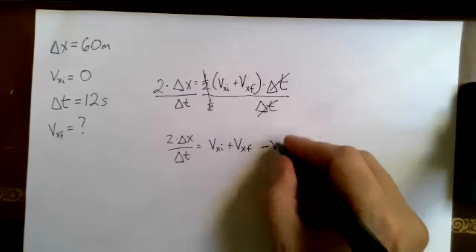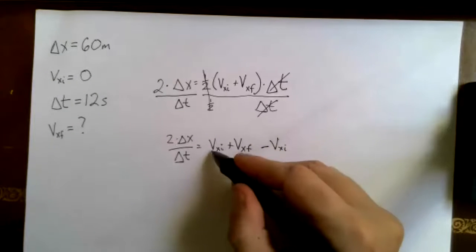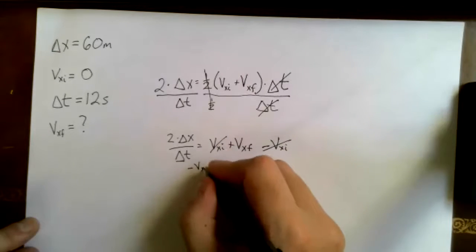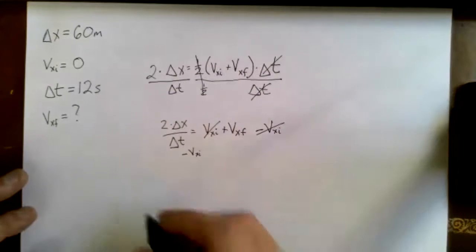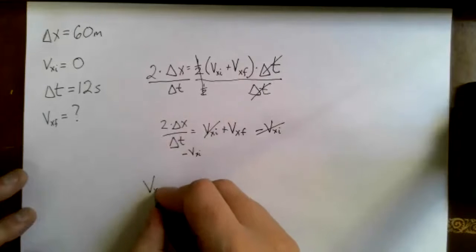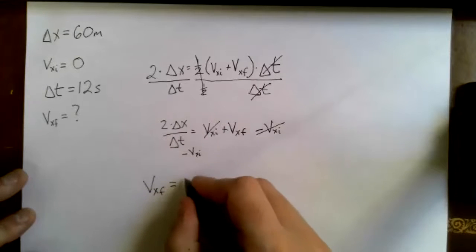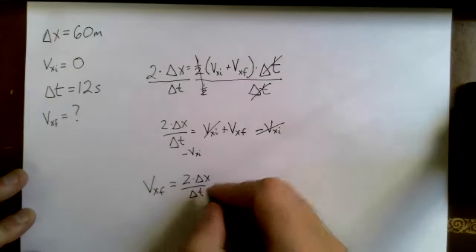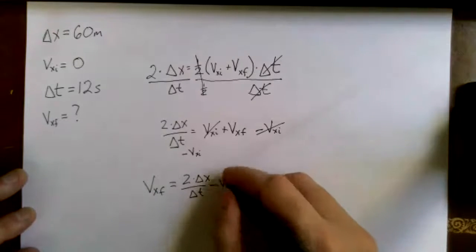Yeah, that's right. You have to subtract the initial velocity from both sides because if I subtract it from this side, I have V_xi minus V_xi and they cancel out. When I rewrite my final equation, I get final velocity equals 2Δx÷Δt minus my initial velocity.